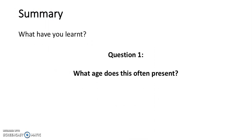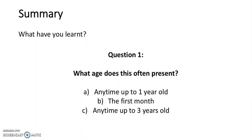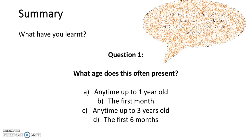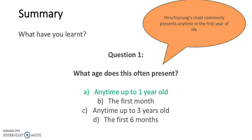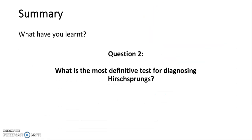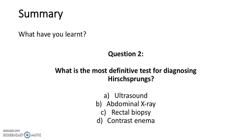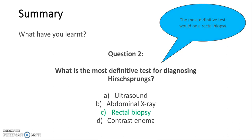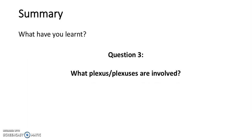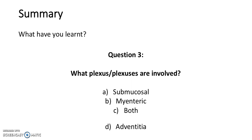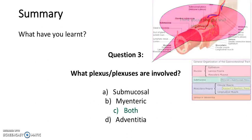So in summary, we're going to go back over the MCQs to see whether we've learnt anything. Question 1 — what age does this often present? The answer is any time up to 1 year old. Question 2 — what is the most definitive test for diagnosing Hirschsprung's? The answer is rectal biopsy. Question 3 — what plexus or plexuses are involved? The answer is C — both the submucosal and myenteric plexuses.